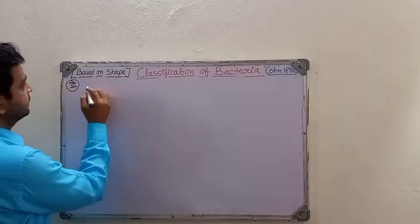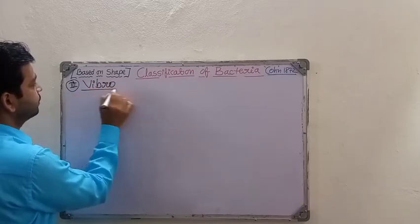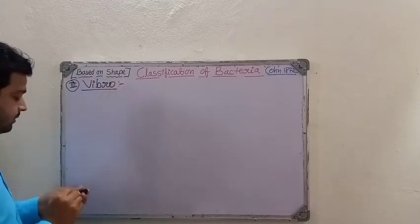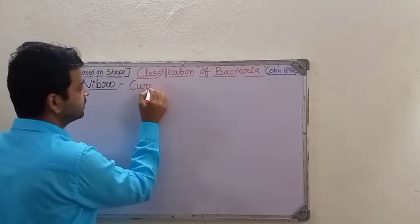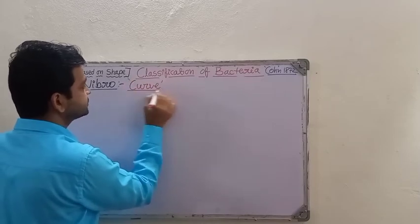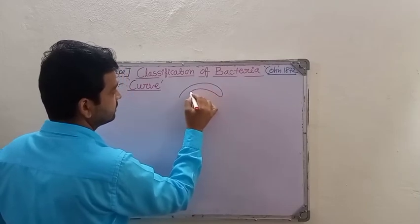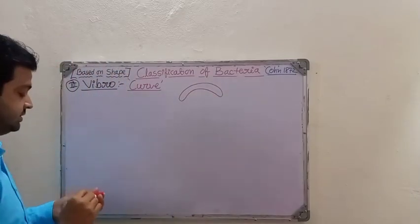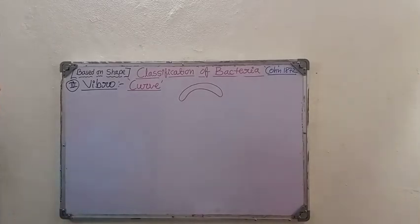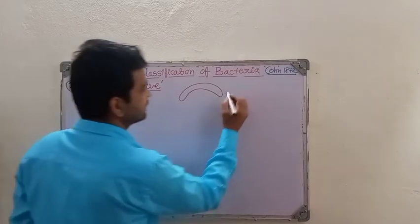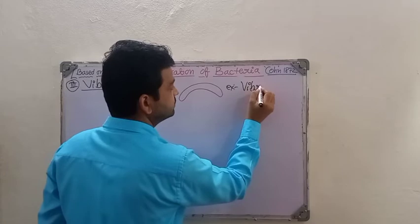The third type is vibrio. When we talk about vibrio-type bacteria, they are going to have a curved structure — like a half-moon or comma shape. The example we can take is Vibrio cholerae.